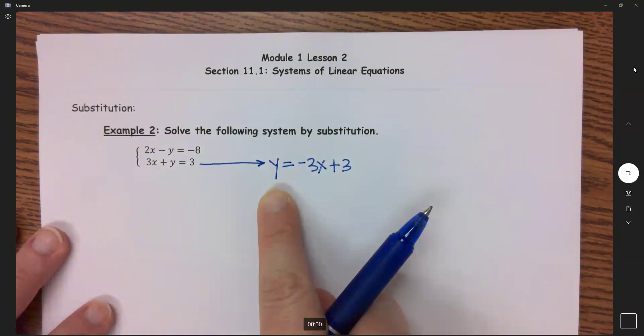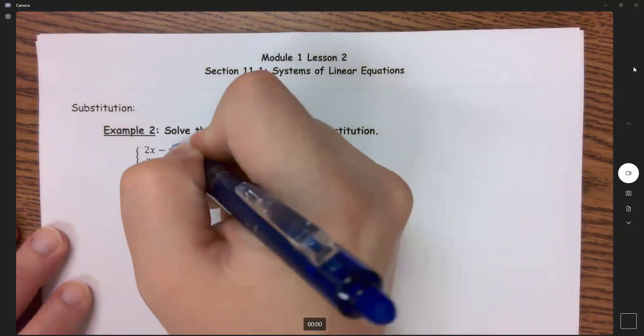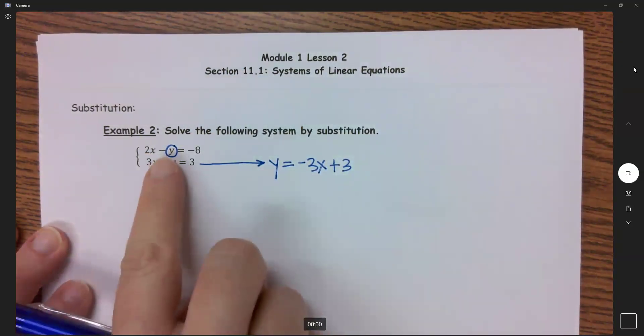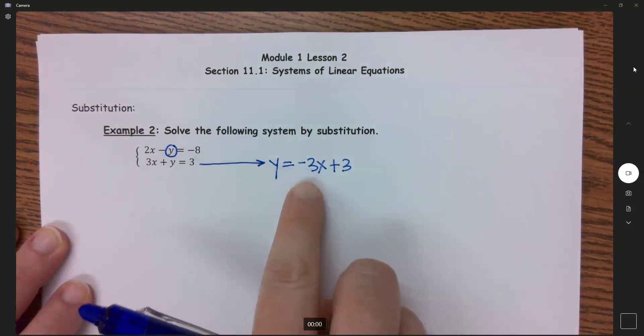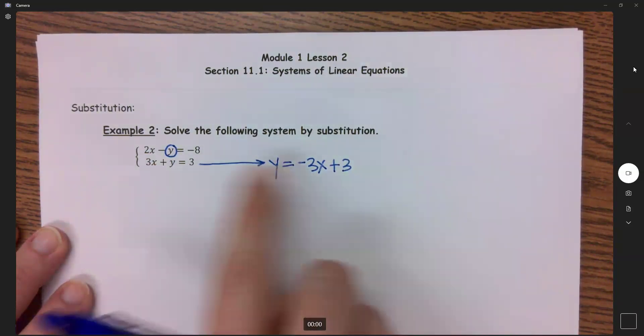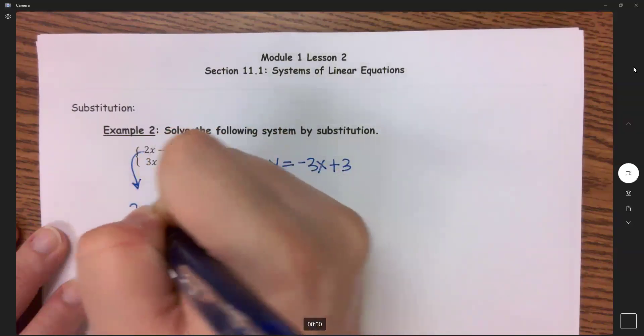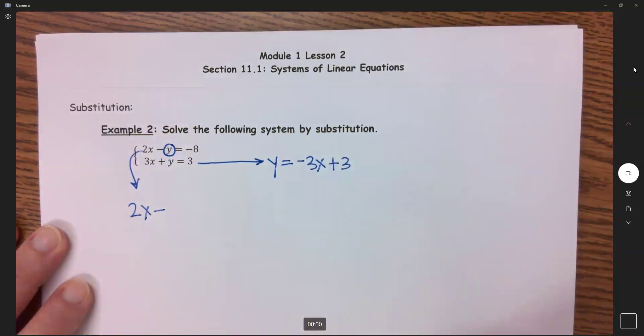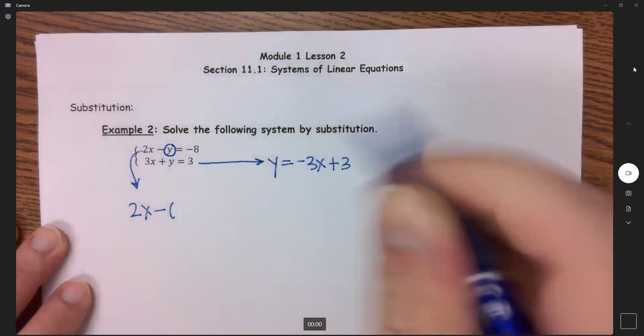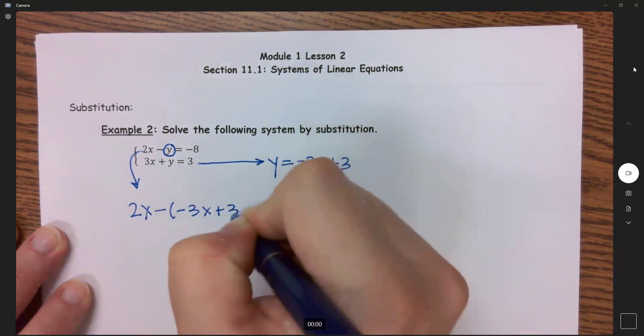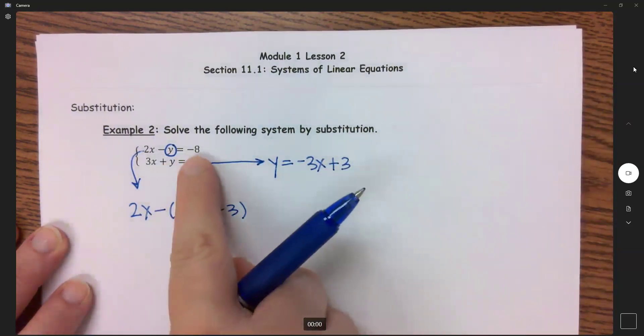Now that I have one of my variables solved for, I'm going to substitute that into this top equation for y. I now know what y equals: y equals negative 3x plus 3. So I'm going to replace this y with what it equals.